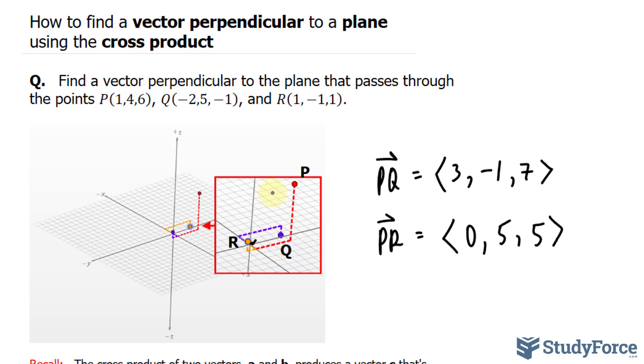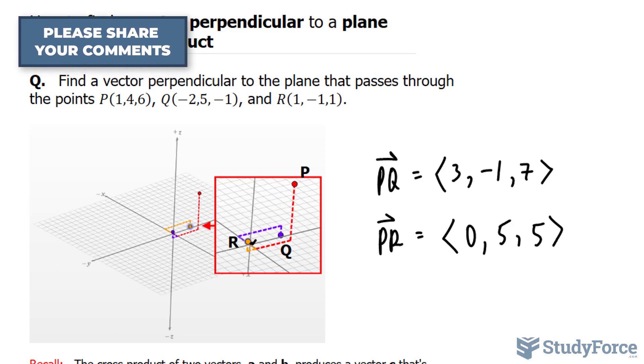that cross product will be perpendicular to both PQ and the vector PR. And if it's perpendicular to these two, then it's perpendicular to the plane itself. So let's go ahead and find the cross product of these two vectors.